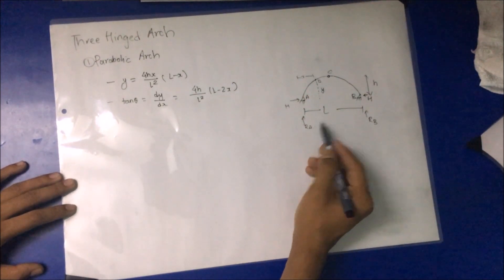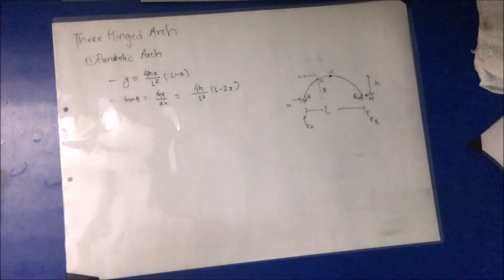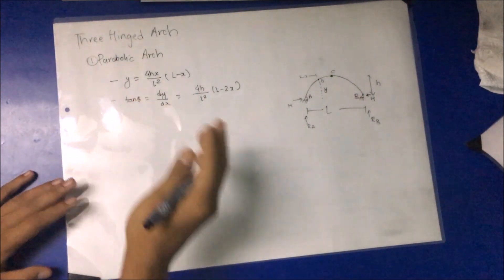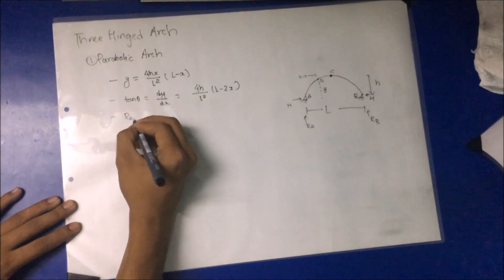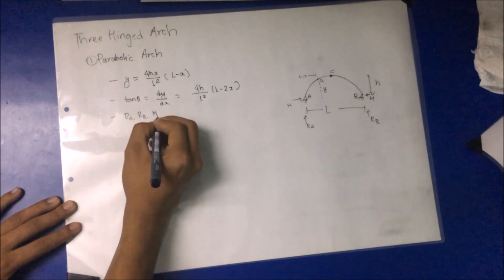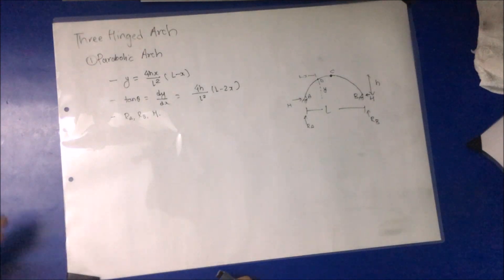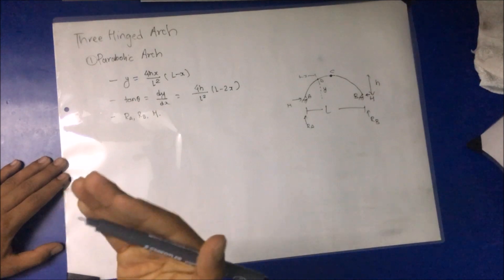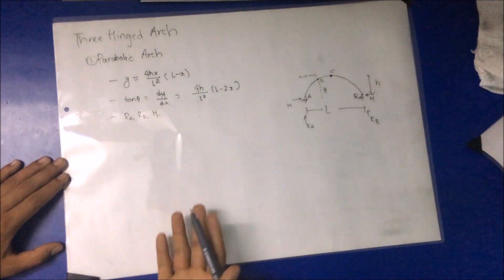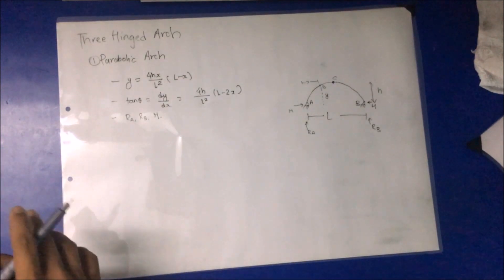Using the static equilibrium equations we can find RA and RB. Then, taking a moment about the hinge — either at the right or left support — we get the horizontal thrust H. With RA, RB, and H determined, we can calculate bending moment, shear force, normal thrust, and radial thrust at any section of the arch.